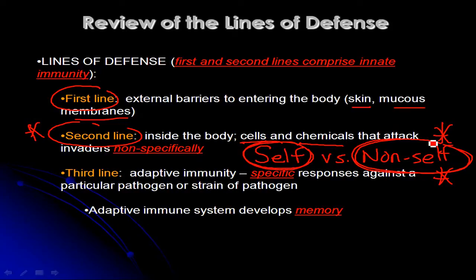People with peanut allergies, for example — peanuts are non-self, they're not a pathogen, and peanuts aren't going to multiply inside your body. But on their surfaces they have molecules that are different from the molecules on the surfaces of your cells, and that constitutes non-self, something your immune system can react to. In some people that reaction goes overboard, while in others our immune systems have learned to tolerate most things we eat and don't react to them.